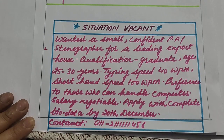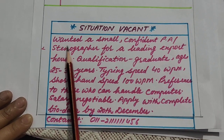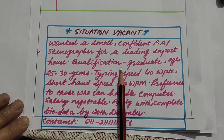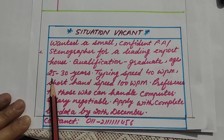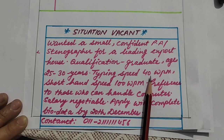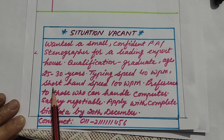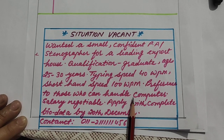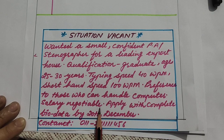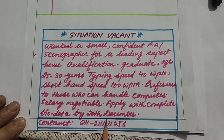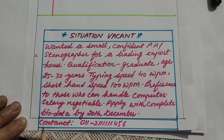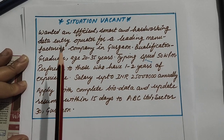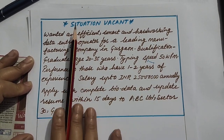Let's see the first sample — Situation Vacant: Wanted, a smart and confident PA-Stenographer for a leading export house. Qualification: graduate. Age: 25 to 30 years. Typing speed: 40 words per minute. Shorthand speed: 100 words per minute. Preference to those who can handle computers. Salary negotiable. Apply with complete bio-data by 20th December. Contact: [phone number].